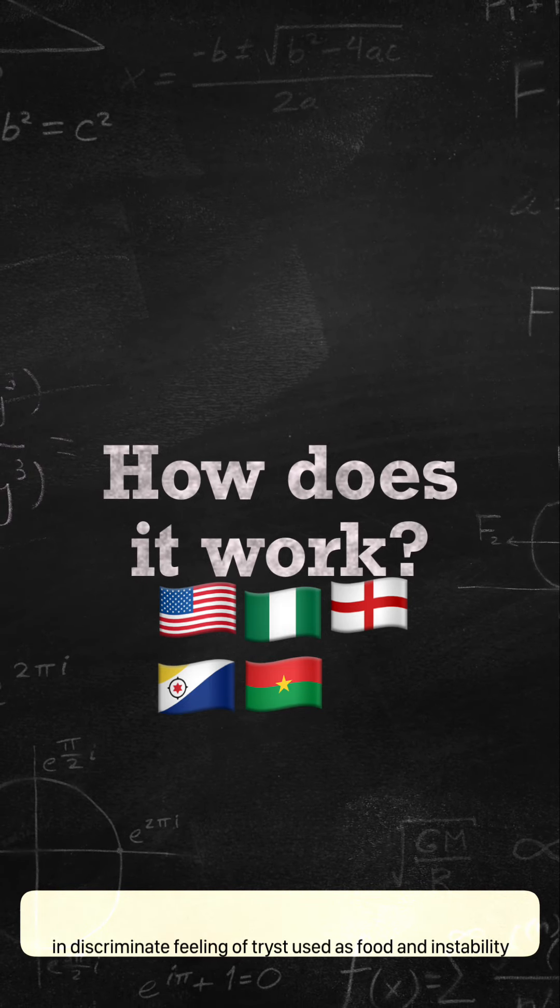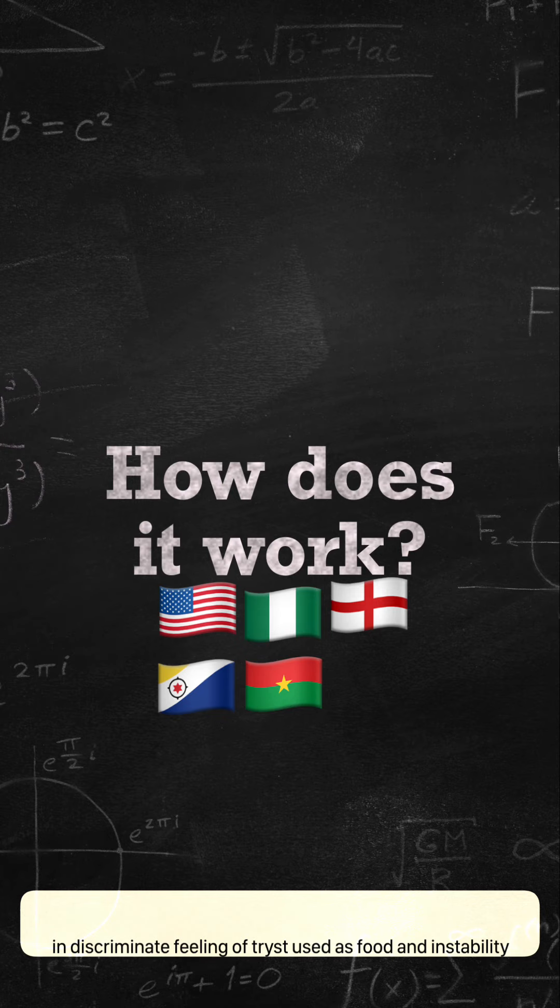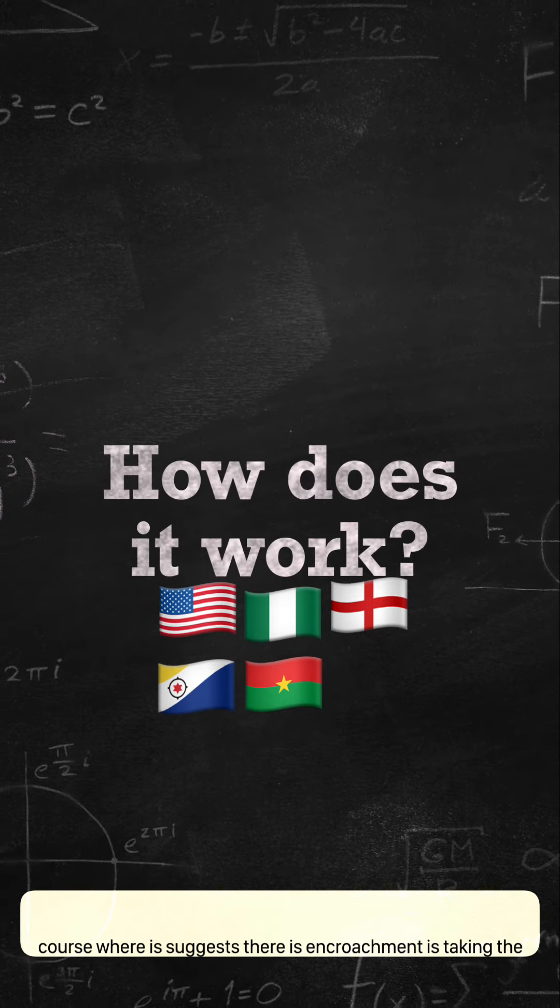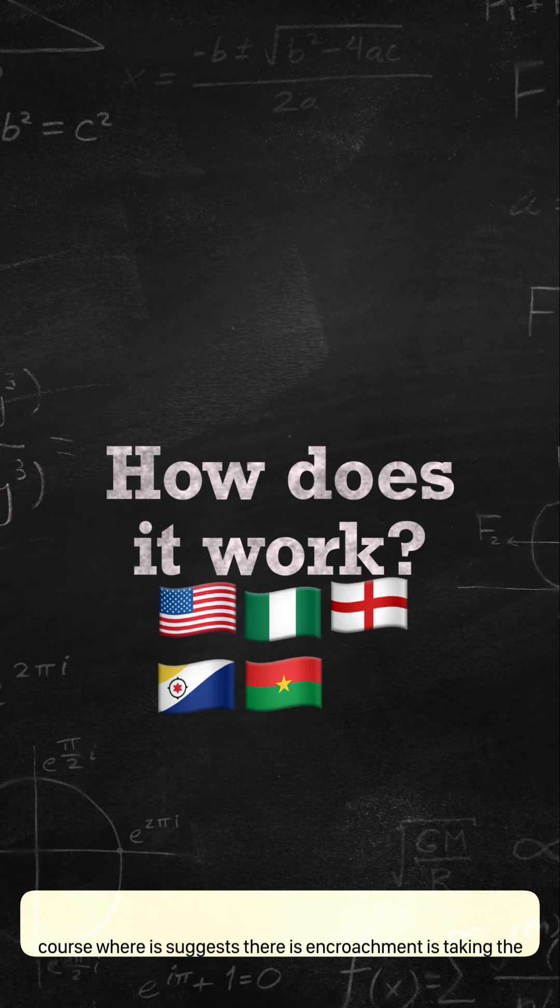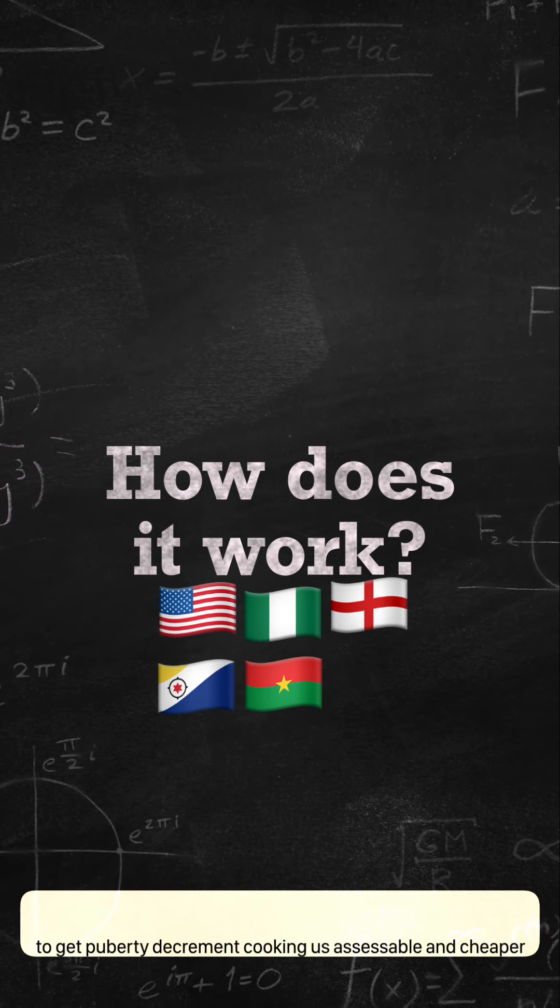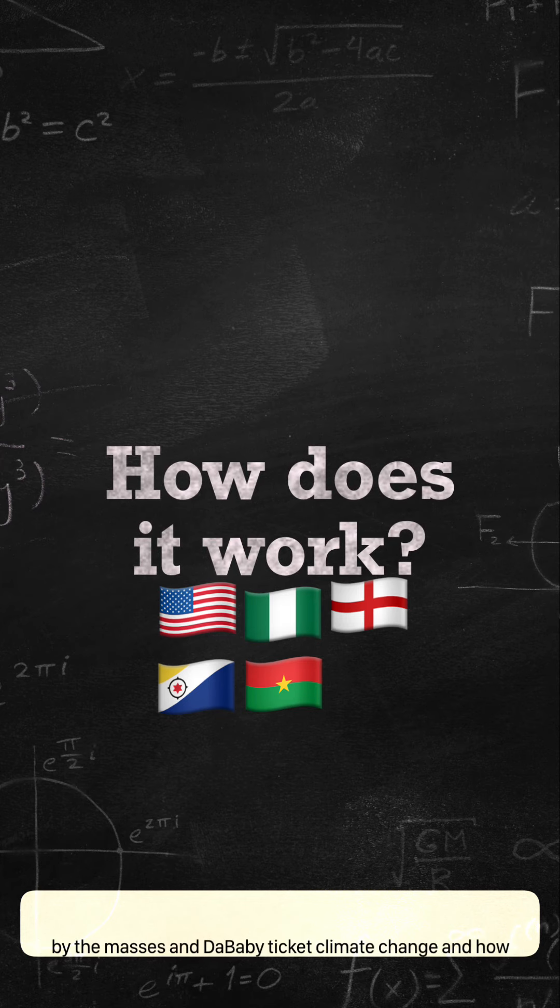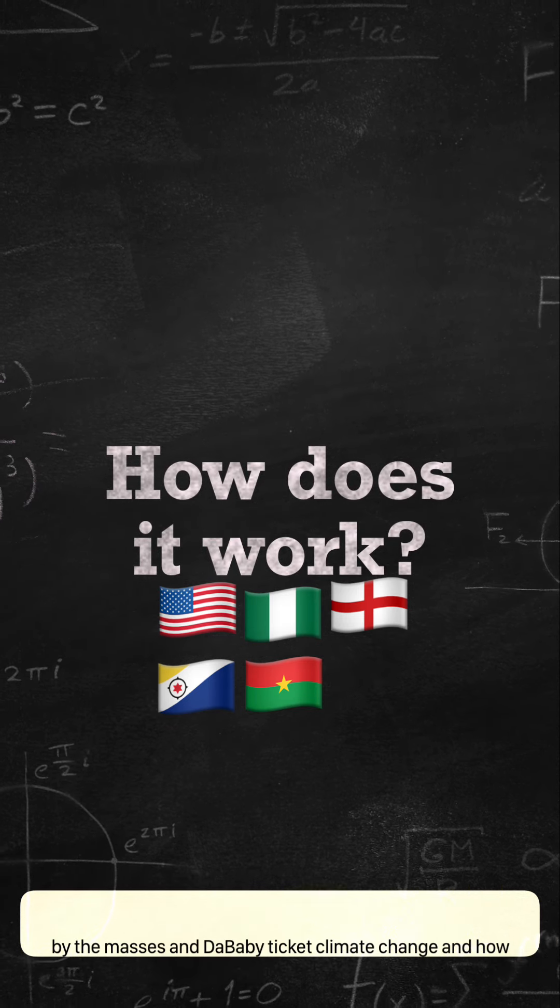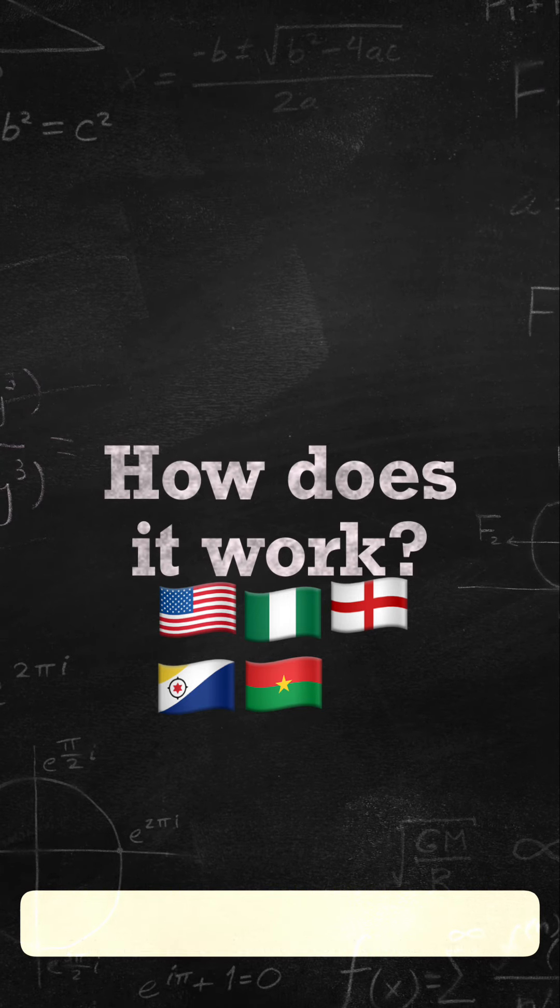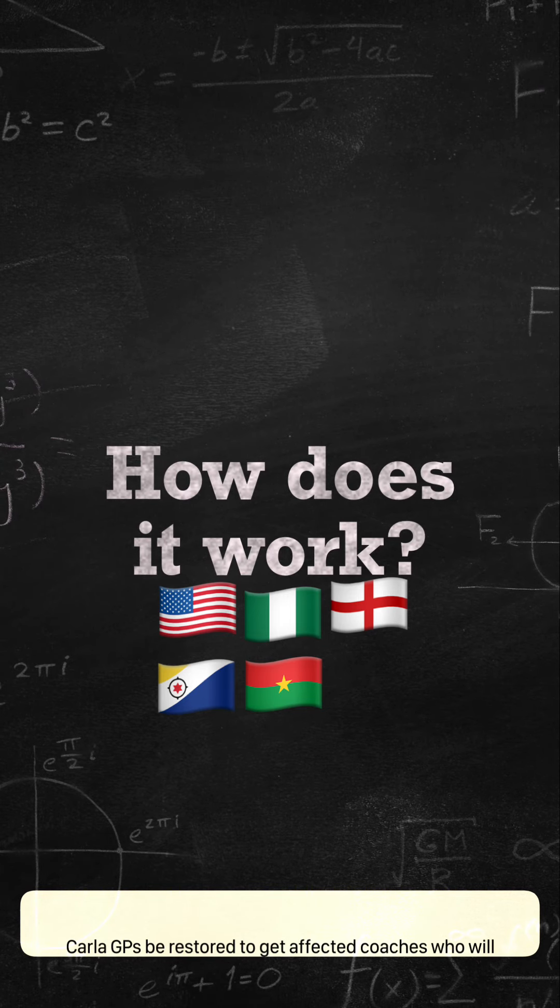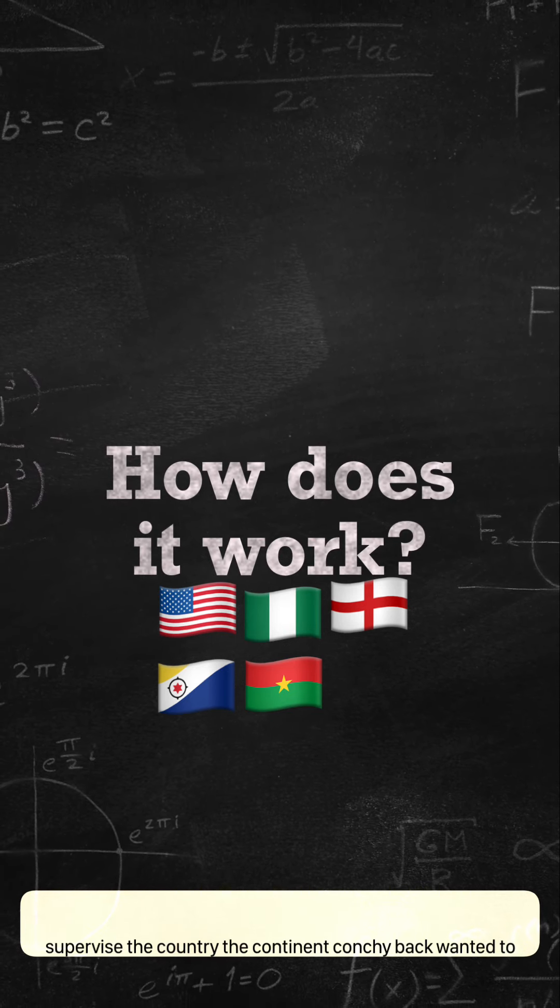Indiscriminate felling of trees used as fuel and instability caused by insurgencies—this encroachment is taking the light of the day. What can international leaders do to mitigate poverty, make cooking gas accessible and cheaper for the masses, and thereby mitigate climate change? And how can relative peace be restored to the affected countries?